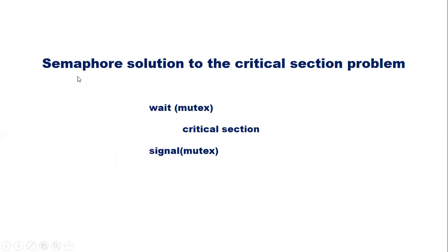Here is the semaphore solution to the critical section problem using binary semaphore. Perform the wait operation on the semaphore named mutex, then perform the critical section, and then perform the signal operation on mutex. If the value of the semaphore is 0, some other process is in the critical section and the process has to wait until the critical section becomes free.